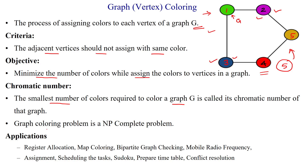The graph coloring problem is a non-deterministic polynomial complete problem — that is, an NP-complete problem — so we can find solutions for the given graph.